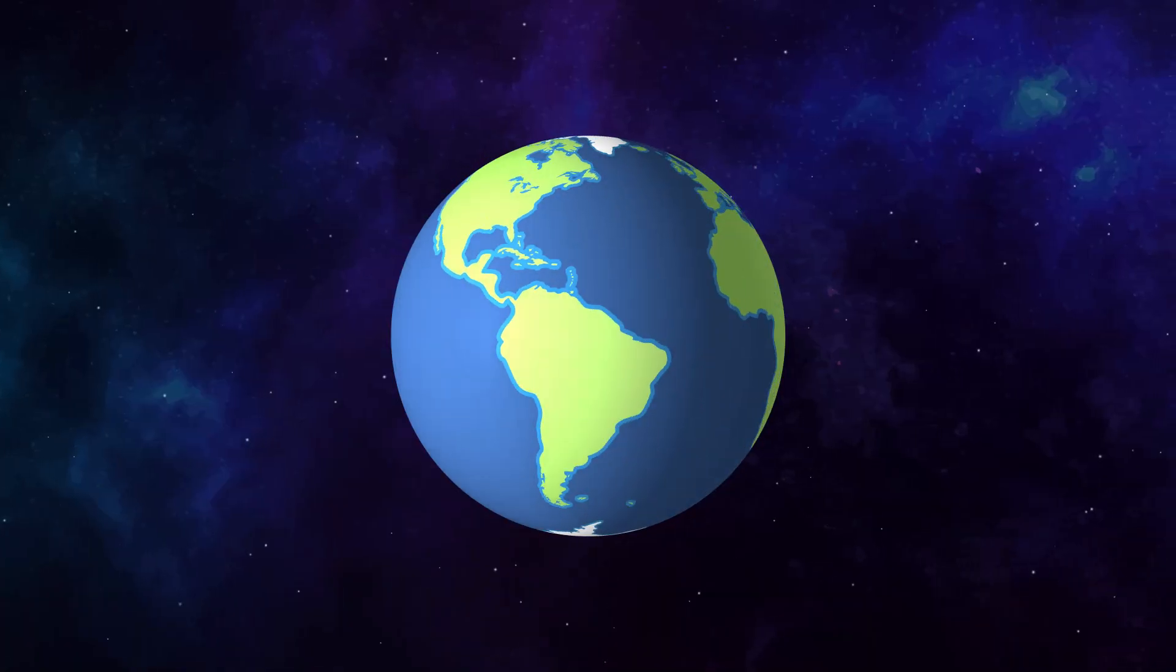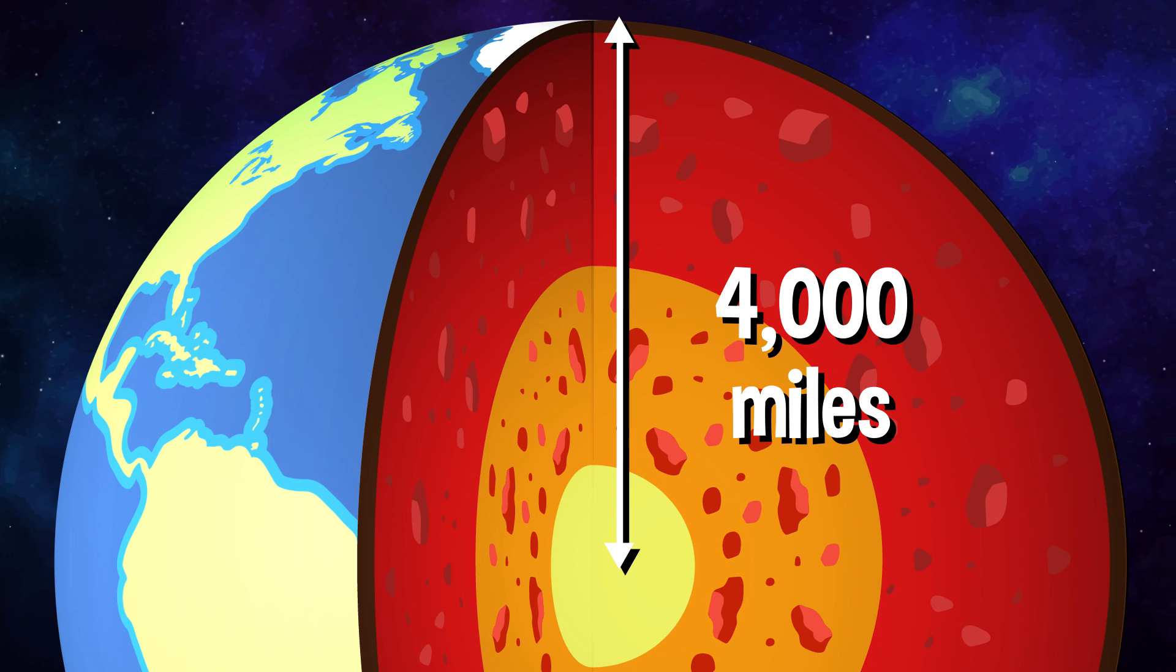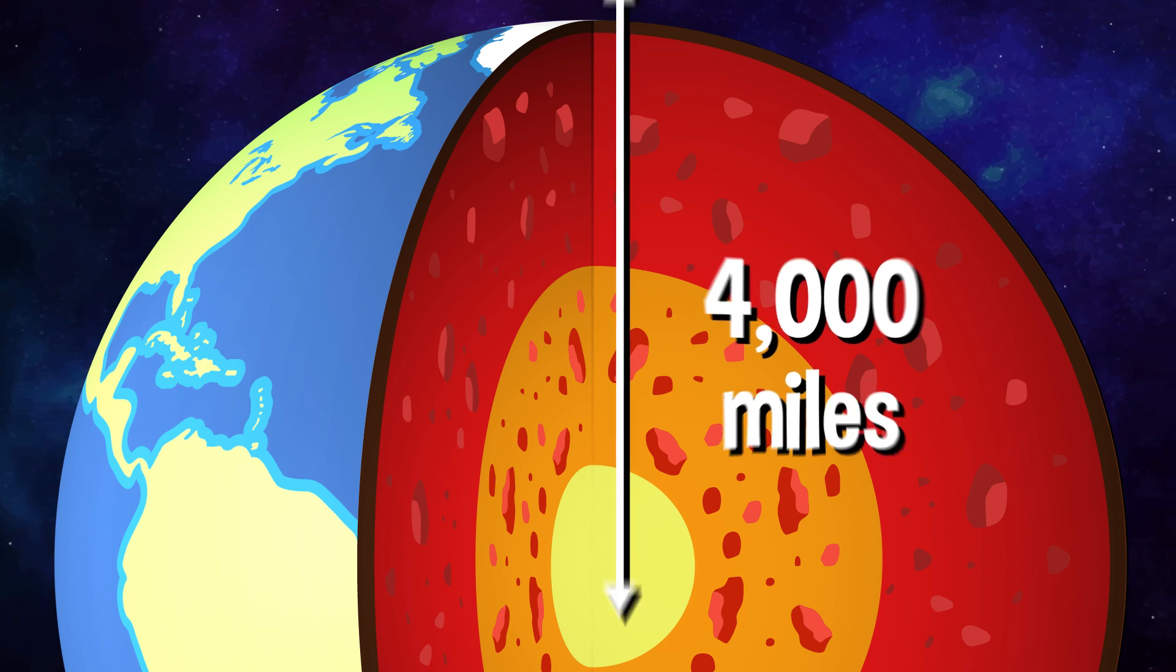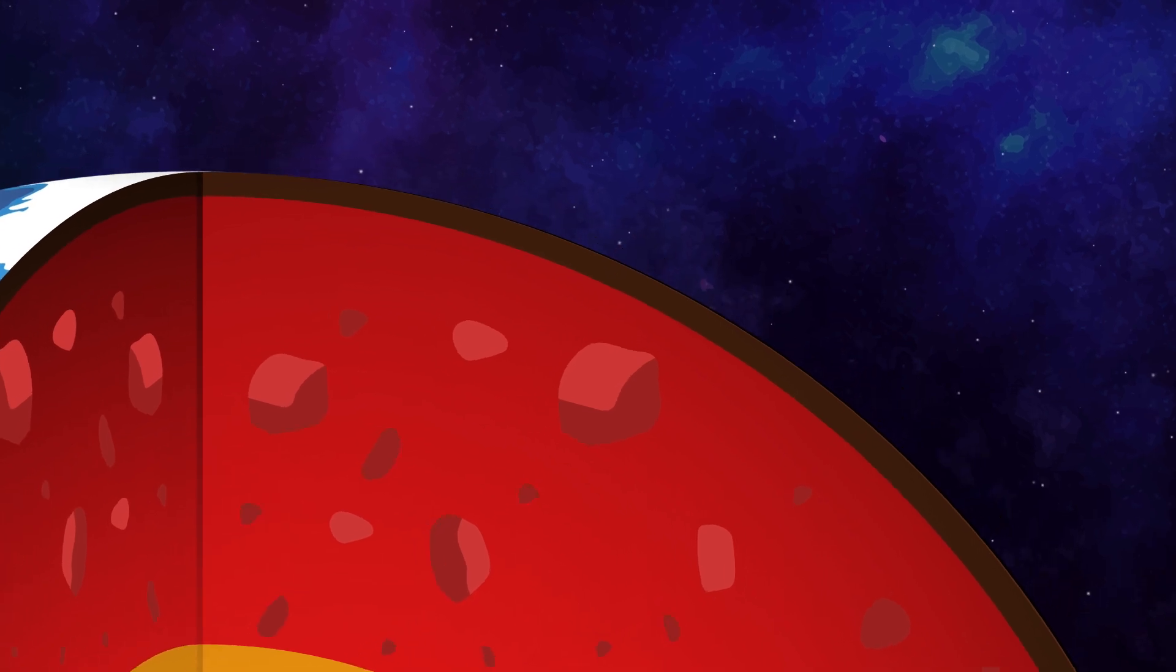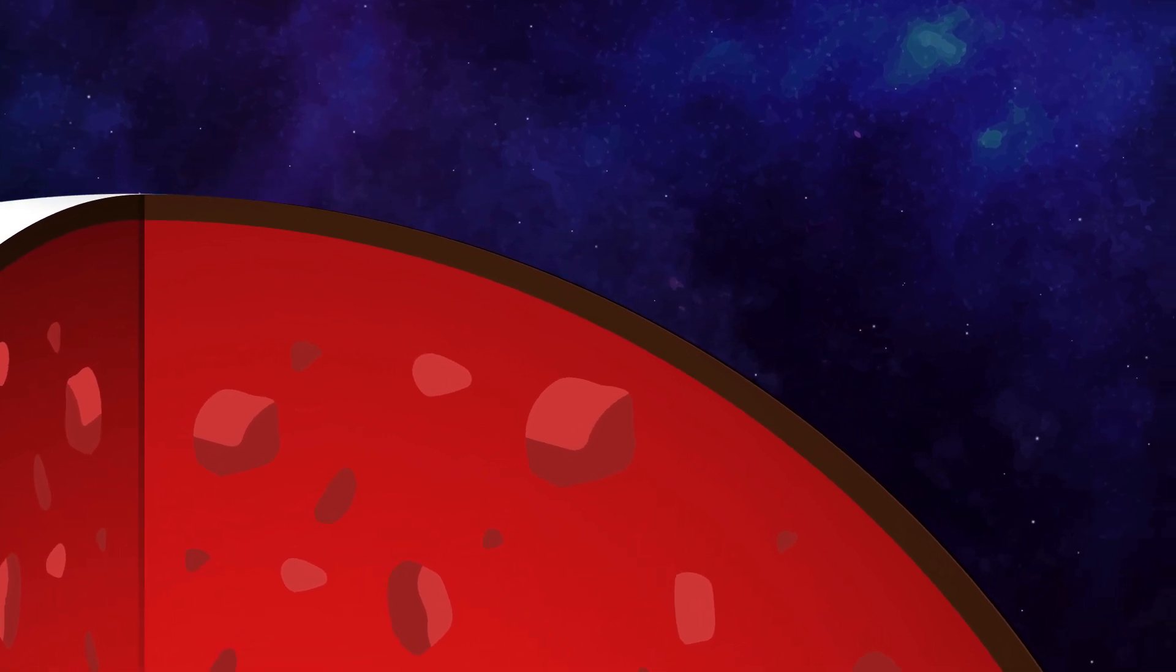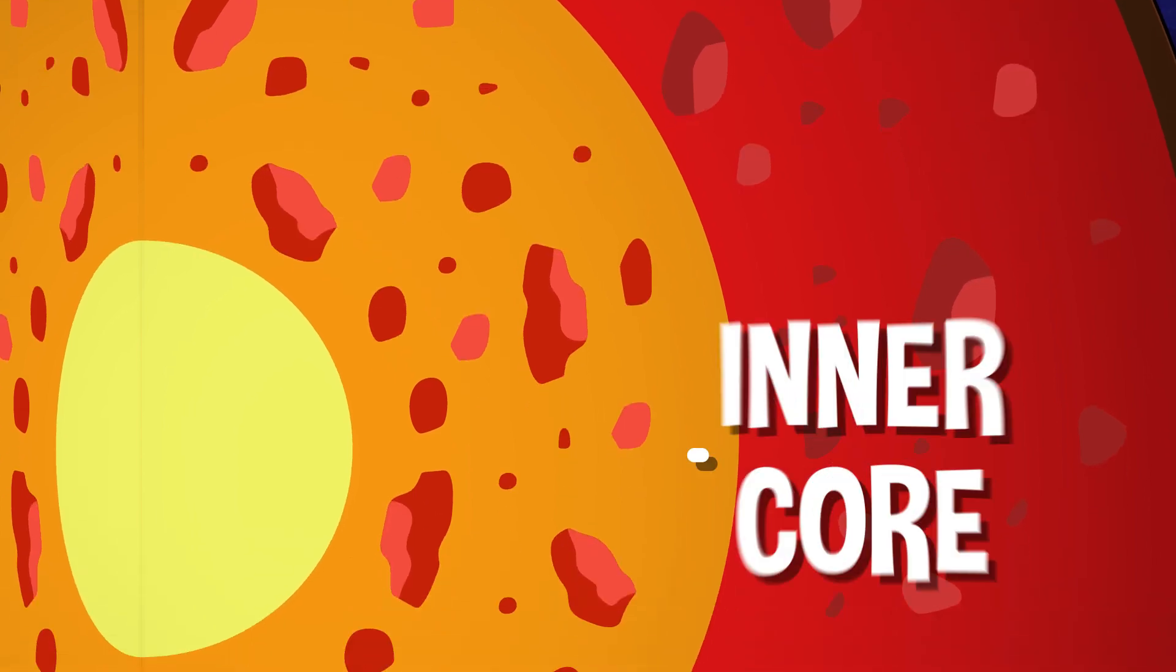The center of the Earth is close to 4,000 miles beneath our feet. That's deep, really deep. If you wanted to tunnel your way down to the center of the Earth, you'd have to dig through the planet's four layers: the crust, the mantle, the outer core, and the inner core.